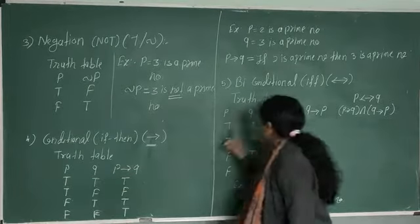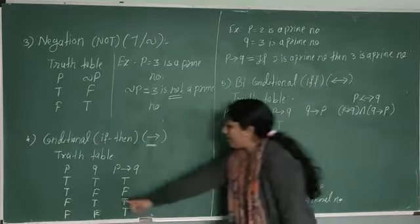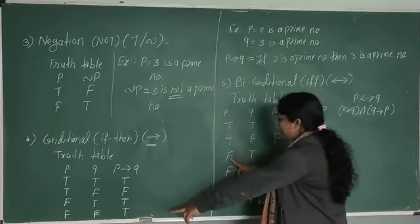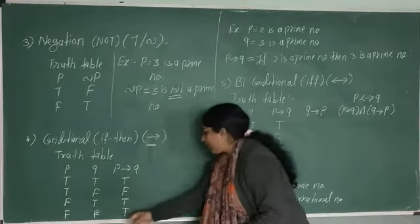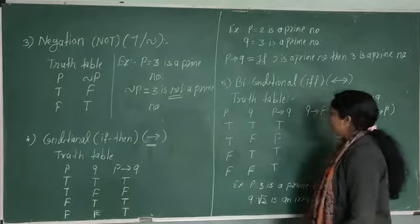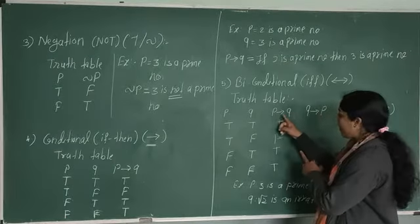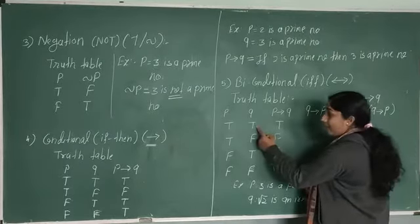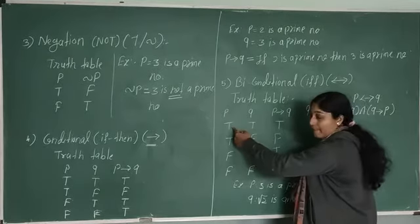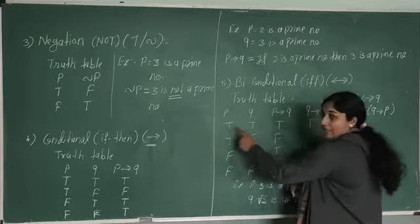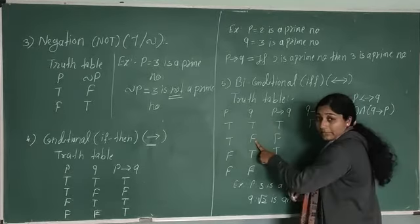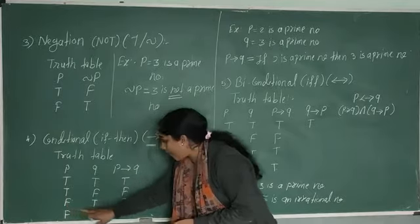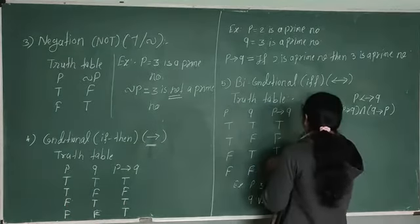For the bi-conditional truth table: if both statements are true, the result is true. If the first is true and the second is false, it is false. If the first is false and the second is true, it is also false. And if both are false, it is true. For Q implies P: when Q is false and P is true, since the first segment is false and second is true, it is true; and when Q is true and P is false, since first is true and second is false, it is false.